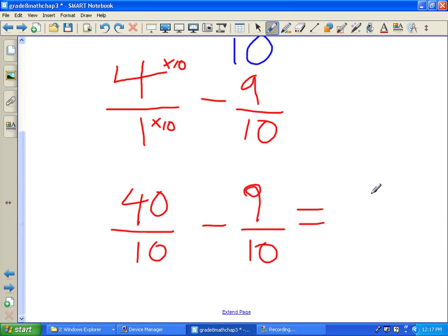And we should be left with thirty-one over ten. Change it back to a mixed number. Well, ten goes into thirty-one three times. And then there's going to be one left over out of ten. And that's our answer.